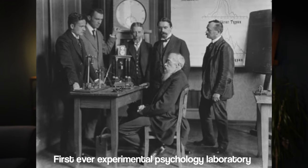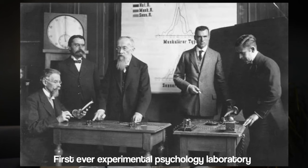To do this, Wundt set up the first ever laboratory in experimental psychology, designed to study the human mind. This was set up in Leipzig, Germany, in 1879.